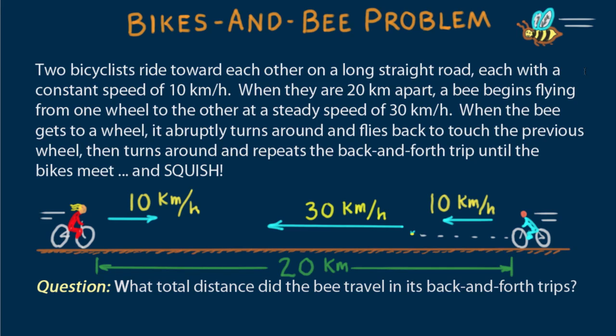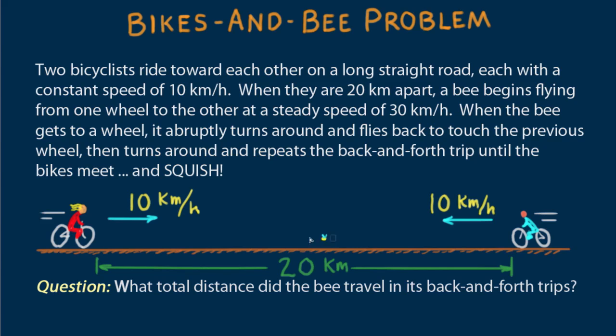This appears to be a complicated problem. After all, as the bee travels between the approaching bicycles, the distance closes and each successive trip by the bee is less and less until the wheels come in contact and squish. But maybe the problem is not complicated. When solving physics problems, an essential approach is first being clear about what is being asked. In this case, it's distance.